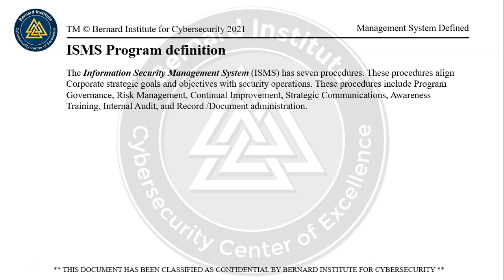The ISMS program definition is as follows. The Information Security Management System — acronym ISMS — has seven procedures we've created based on ISO 27001, the only internationally accepted standard. It includes procedures that align the information security or cybersecurity program with the organization's goals and objectives. These procedures include governance, risk management, continual improvement, strategic communications, awareness training, internal audit, and record and document administration.